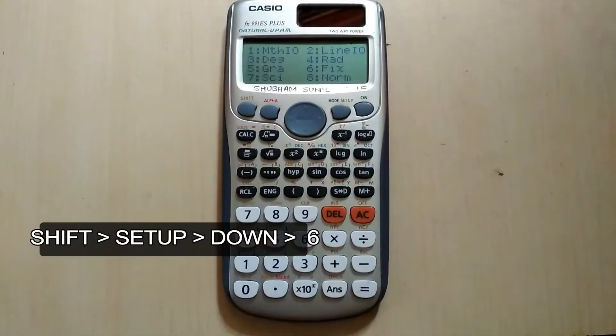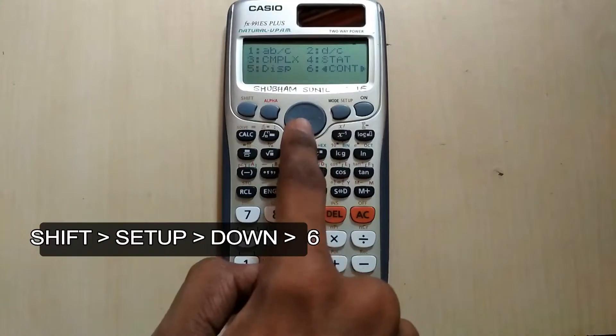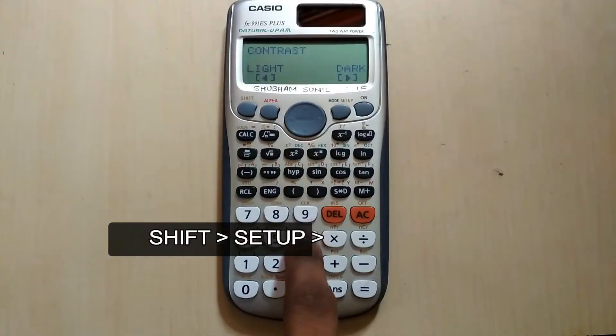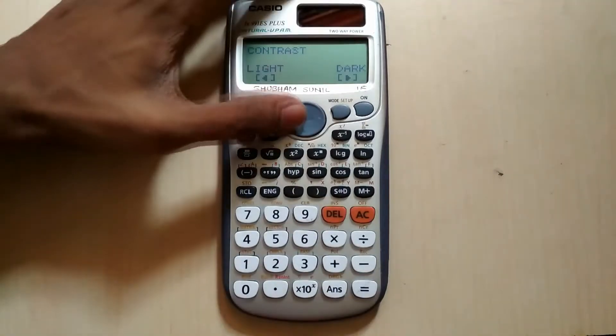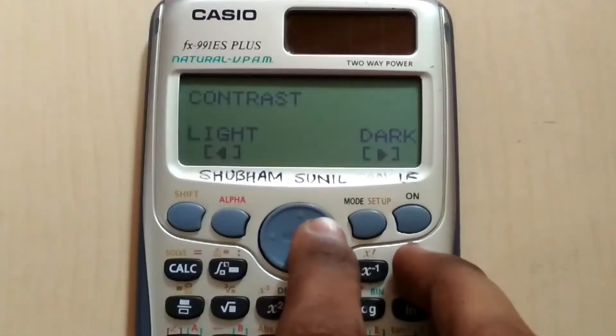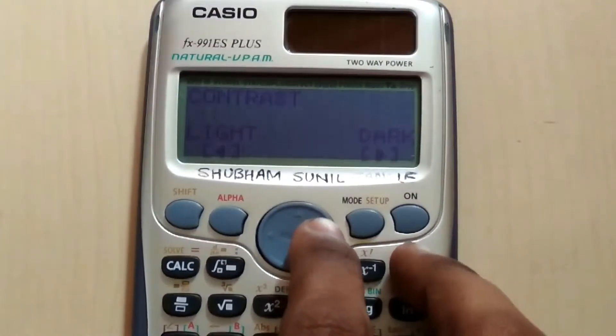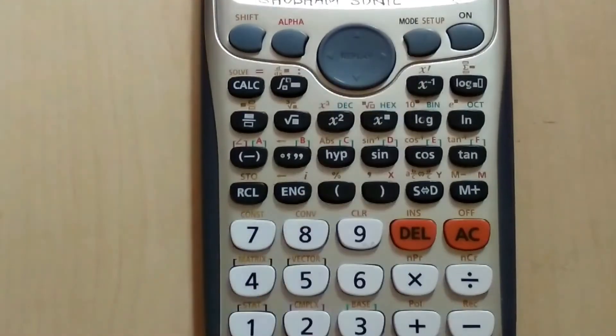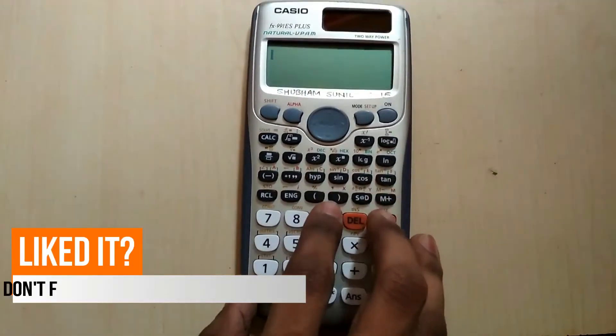Next trick is how you can increase or decrease your contrast or brightness of your screen. Just press shift, set up, down button, and 6, and you can increase or decrease the brightness of your display.